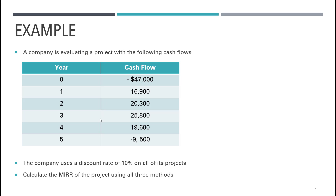Apart from this information, the company uses a discount rate of 10%. Since it is a non-conventional cash flow, it would be better to use MIRR using all three methods as mentioned earlier. It's very important — I personally prefer to have everything depicted in a timeline so that it's easier to look at. In this case, the timeline will last for five years.